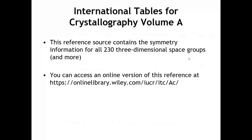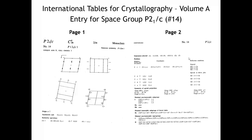Let's turn our attention to a very useful resource for anybody doing crystallography: the International Tables for Crystallography, Volume A. There are many volumes, but Volume A contains all the information we need about the 230 space groups, as well as the plane groups from the last lecture. At Ohio State University we can access this through the library. We'll highlight this resource using the example of the P2₁/c space group, one of the most commonly encountered of all 230.